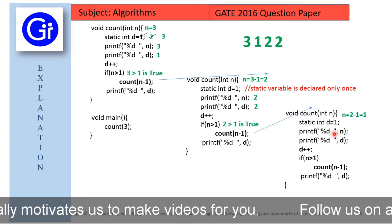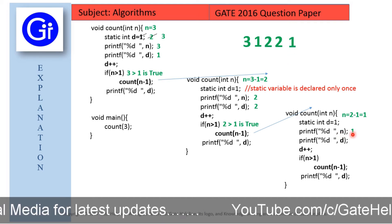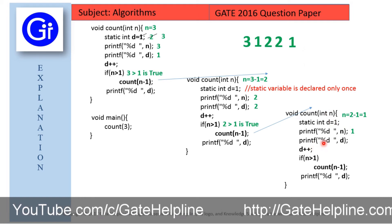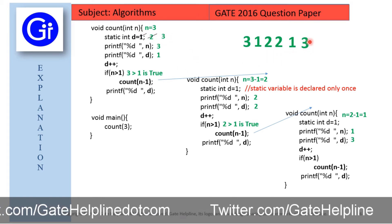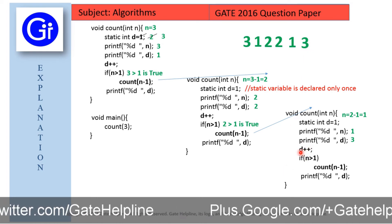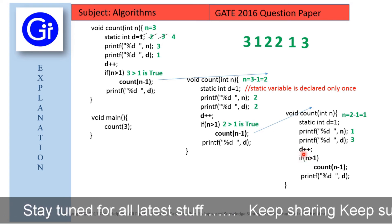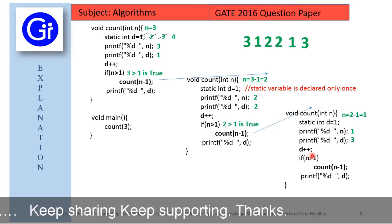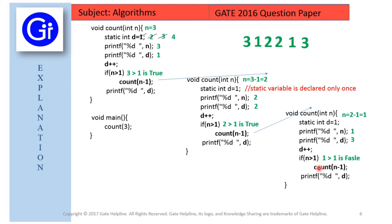Inside this call, the static declaration is ignored. We print n, which is 1, to the output. Then we print d, whose updated value is 3, so we print 3. After that we increment d to 4. The if condition checks 1 > 1, which is false, so we skip the recursive call. We then print d, which is 4, to the output.